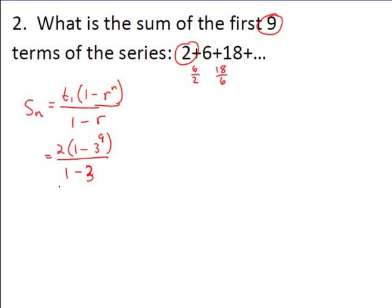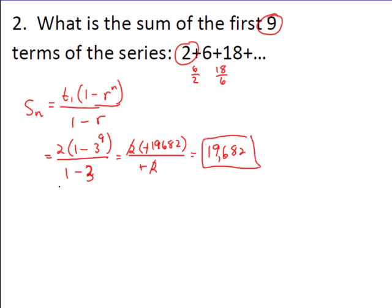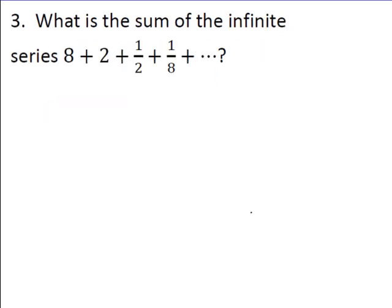Plugging in: S9 = 2 times (1 minus 3 to the ninth) over (1 minus 3). We calculate 1 minus 3 to the ninth, which gives negative 19682. Then 1 minus 3 is negative 2 — the twos cancel and the negatives cancel — so the sum of this finite geometric series is 19682.